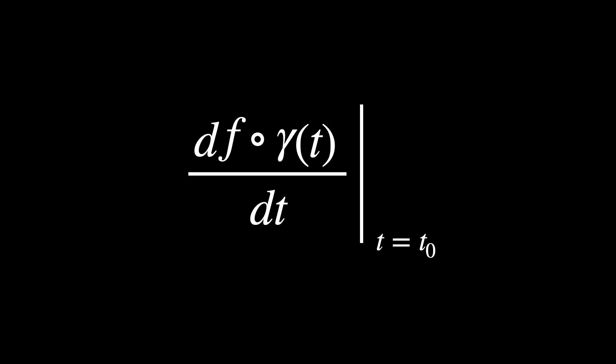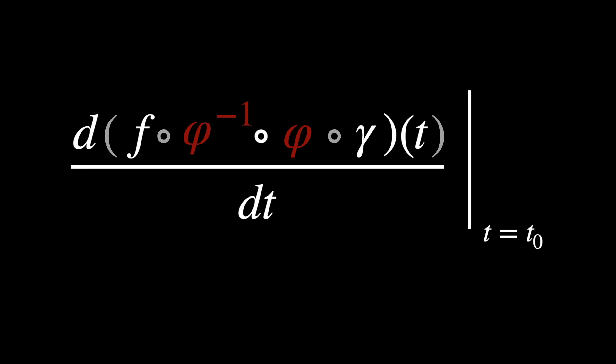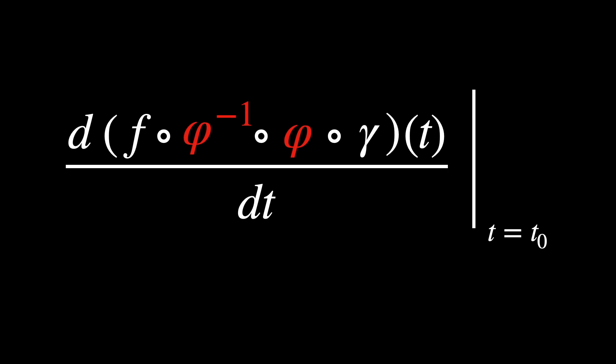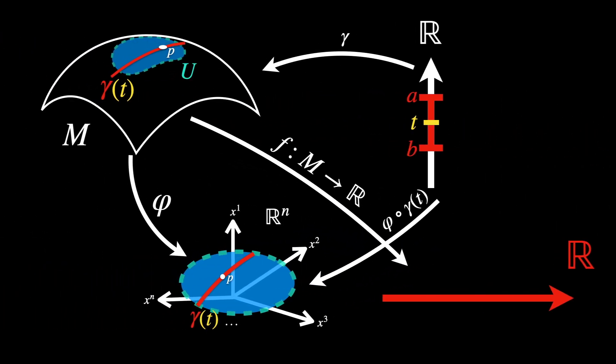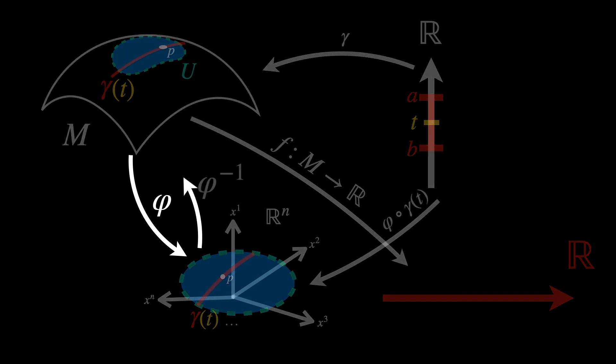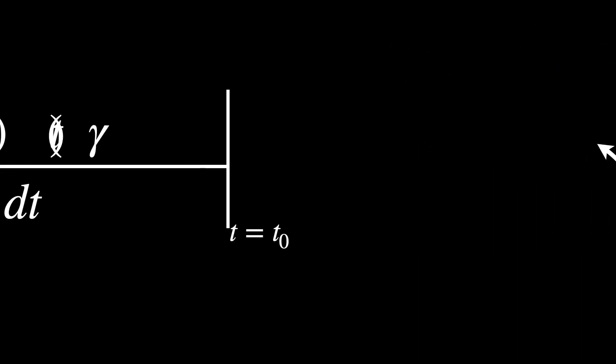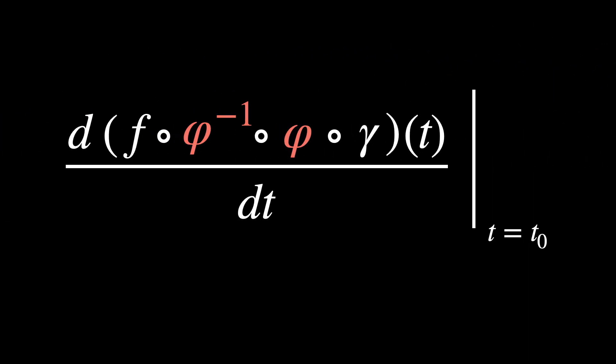But here's a really fun trick we can do by introducing phi and its inverse. It's a trick because it doesn't really do anything. It's just like adding zero or multiplying by one. Because this introduction is quote unquote harmless, we can therefore put it like this.